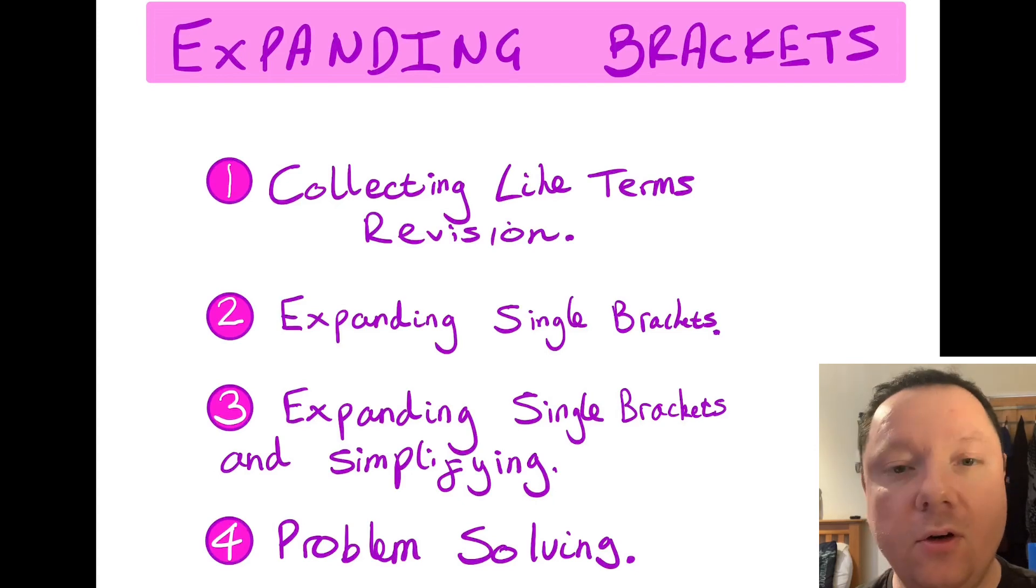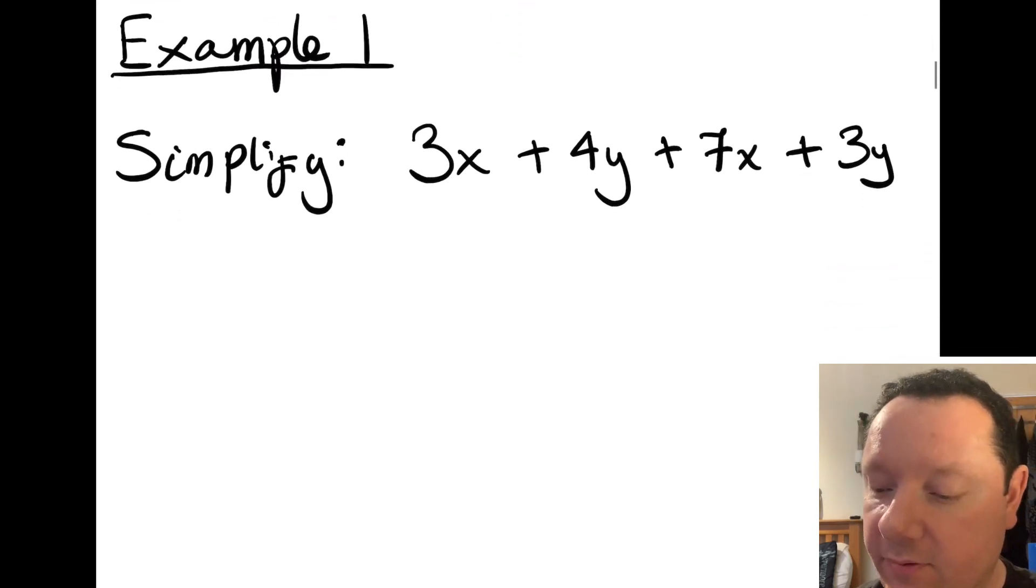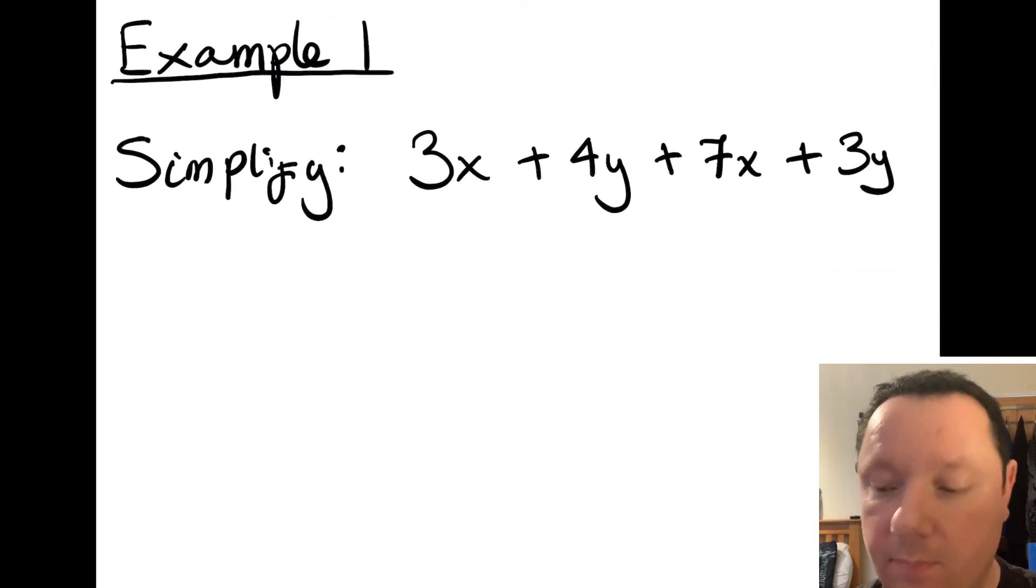Okay, let's move on to the first thing we're going to do is looking at collecting like terms, and this should be revision from last year. So number one, collecting like terms. Going straight into an example. Example one says 3x plus 4y plus 7x plus 3y. So we need to identify which terms are the same. So if I get a highlighter, and you can do this at home, or you could use just different colored pencils.